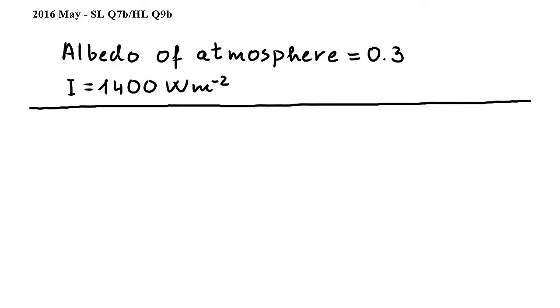In this question we have to deduce that the average intensity over the entire surface of the earth is equal to approximately 245 watts per meter squared.